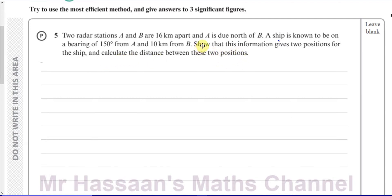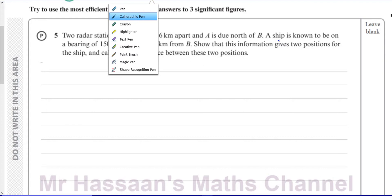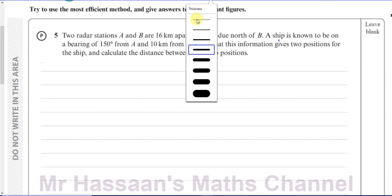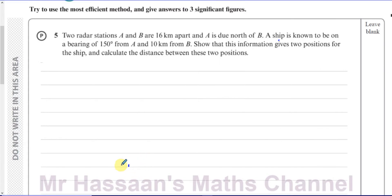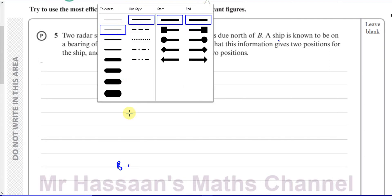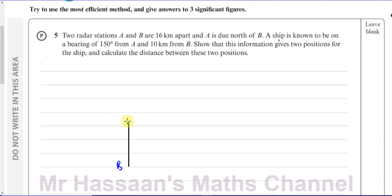First of all, we have point A and point B which are 16 kilometers apart. I'm going to make a diagram with point B and point A. A is north of B, so B is going to be somewhere down here and A is due north of B. I'm going to draw a line straight up from B to A — this is where we get A and this is where we have B.